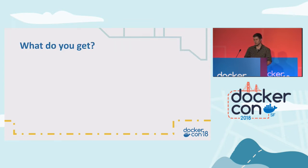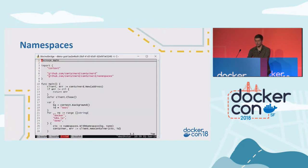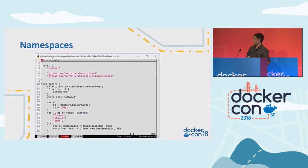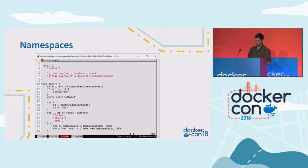What you get with the Containerd smart client is multi-tenancy via Containerd namespaces. Since our clients are various container platforms, we needed a single daemon that can service both Docker, Kube, and others at the same time without conflicts with container IDs. Every client should be able to have a container named 'test' and not conflict with each other. Containerd uses context within Golang, and you can set a namespace on a context whenever you interact with the client. Almost every API within Containerd is namespaced — from snapshotters to containers to tasks to images.